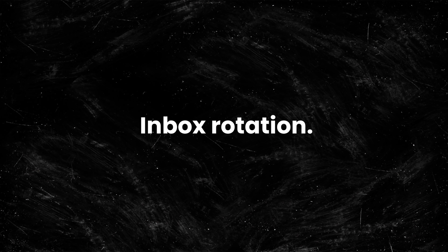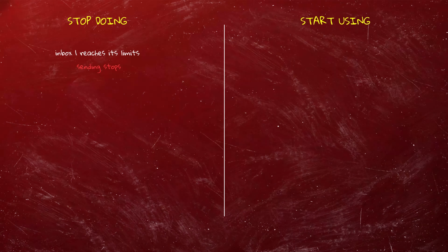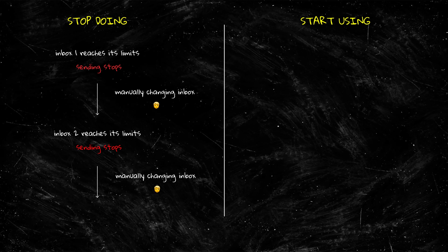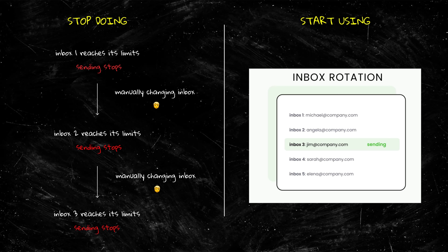8. Inbox rotation. Using multiple mailboxes to send one campaign helps to maintain high deliverability. In Woodpecker we have a feature called inbox rotation. When one inbox reaches its sending limits, another takes over, preventing issues with sending limits and ensuring messages reach your prospects.